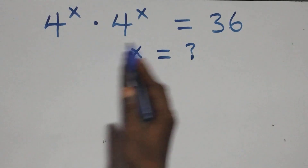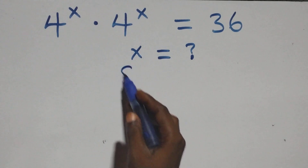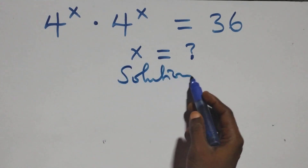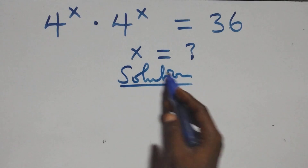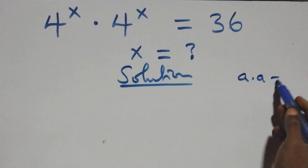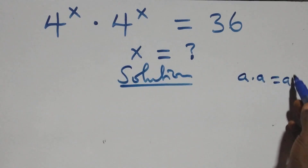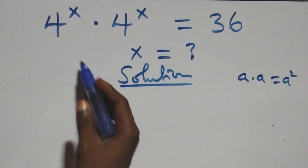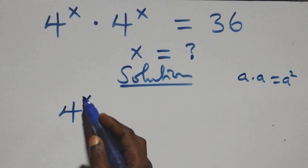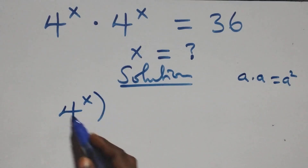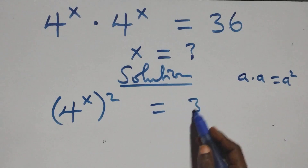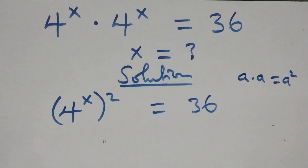How to solve this nice exponential equation. What we have here follows when we have a times a, which is the same thing as a squared. This same thing multiplying here, we can write it as 4 raised to power x, times 4 squared, equals to 36.